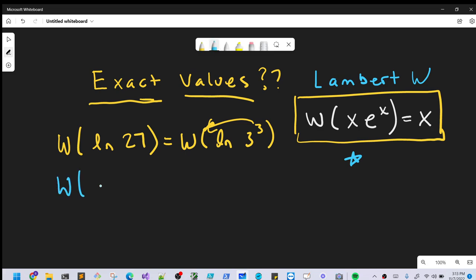So we'll have Lambert W of 3 ln 3, but then we can rewrite our 3. We have this formula where we can write anything with making a base e, so we can write it as e to the ln 3.